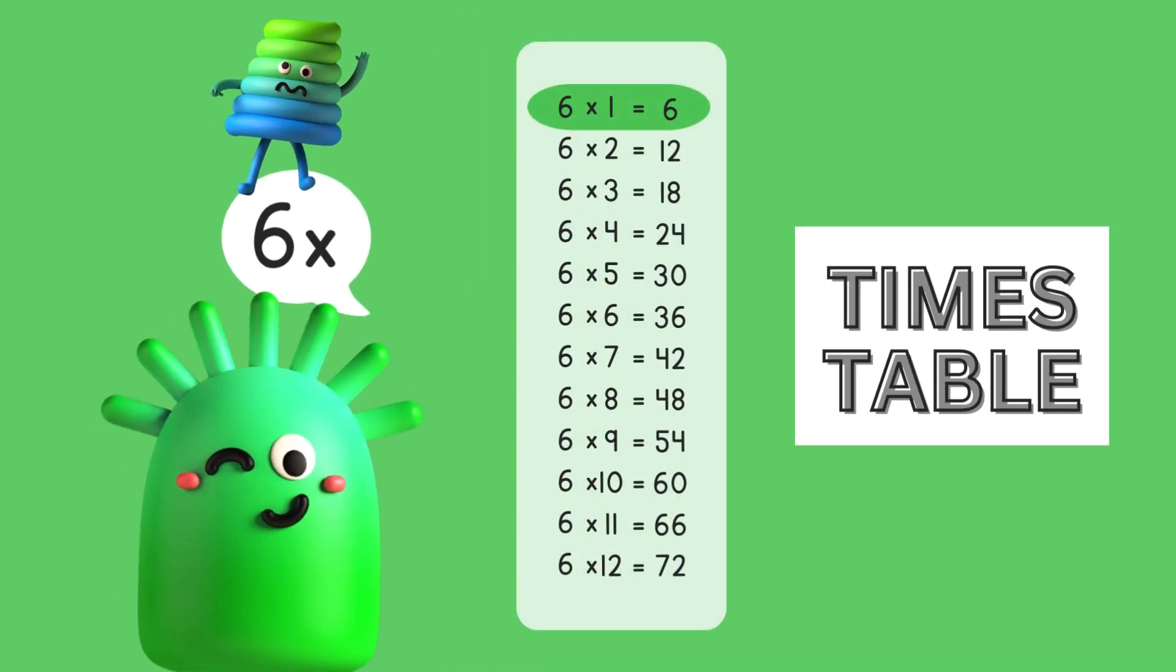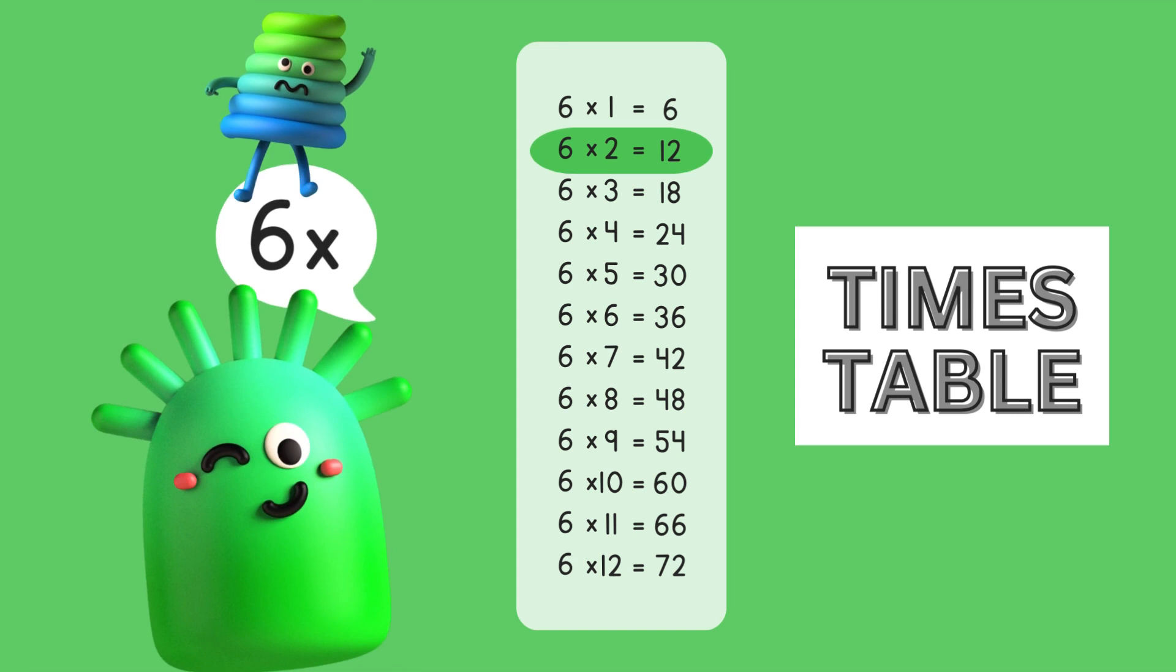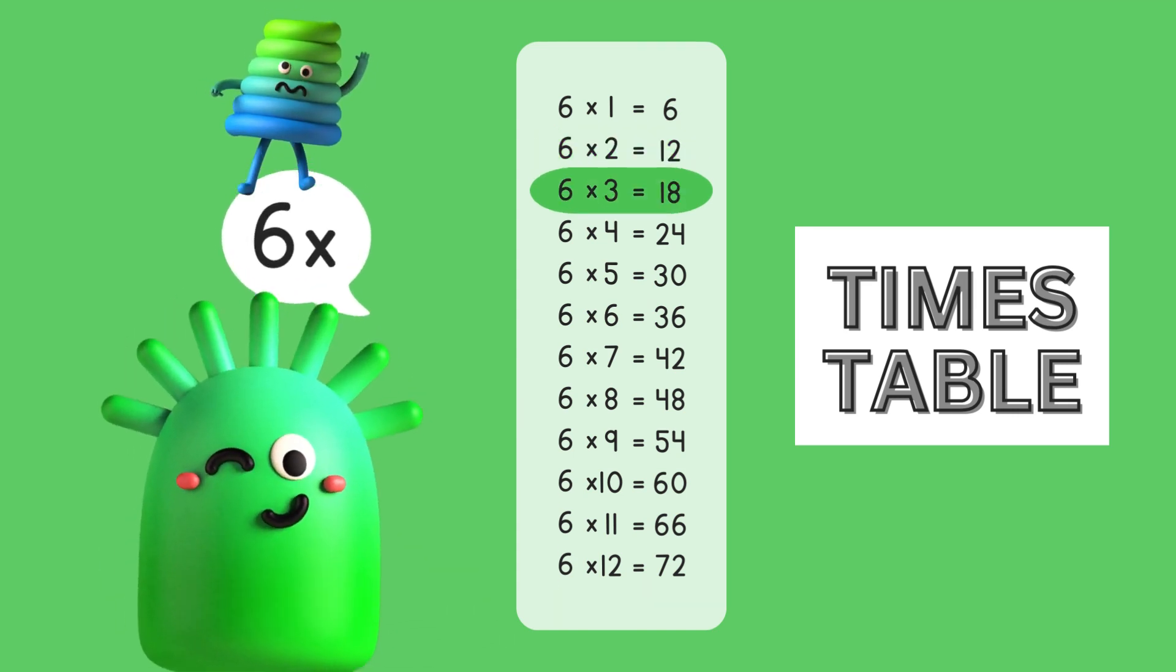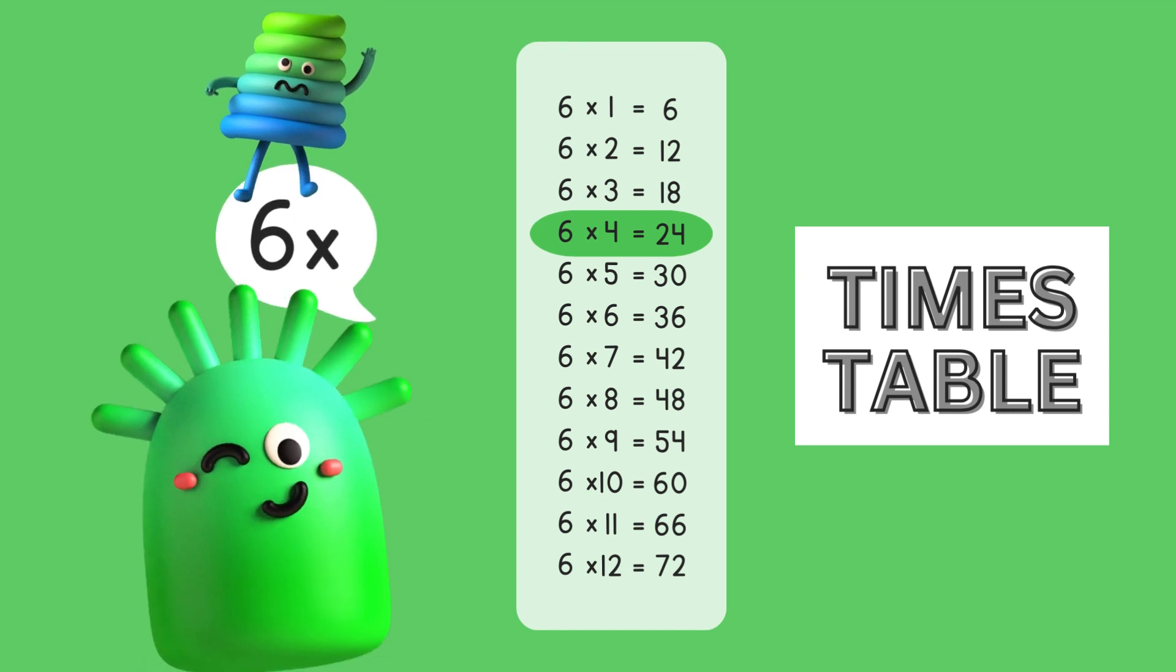Six times one is six. Six times two is twelve. Six times three is eighteen. Six times four is twenty-four.